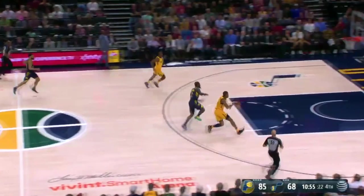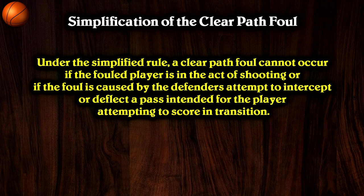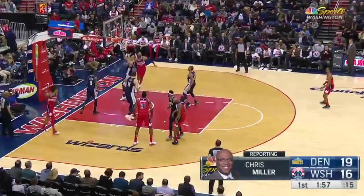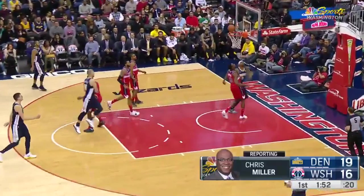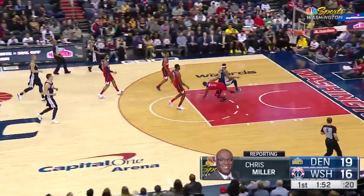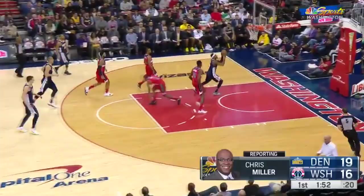The second part of this new rule states that, under the simplified rule, a clear path foul cannot occur if the fouled player is in the act of shooting, or if the foul is caused by the defender's attempt to intercept or deflect a pass intended for the player attempting to score in transition. If you look at this clip, Bradley Beal fouls Torrey Craig of the Denver Nuggets while trying to intercept the pass. This was called a clear path foul before, but now it no longer is because Beal is making a play on the ball as he tried to go for the steal. Overall, I like this new simplified clear path rule. It was too complicated before and sometimes the calls were kinda weird, so now it should be better.